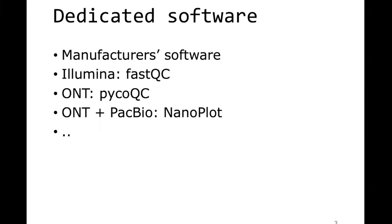How would you get that information? Luckily there is a lot of software written to help you do that. One option is the manufacturer software — all sequencing technologies provide some level of quality control with their machine. That is the case for Illumina, PacBio, and Oxford Nanopore technology. Especially for long read sequencing methods it is recommended to look at those because their quality measures can be quite specific.